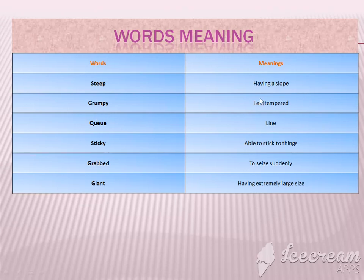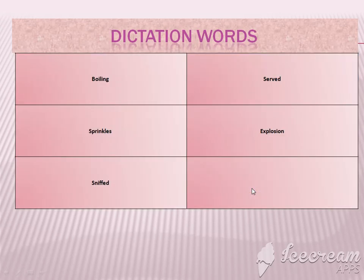Number one is steep — having a slope — jho aapke ups downs hote hain, dhalan si jo bani hoti hain. Grumpy — bad tempered. Sticky — able to stick. Grab — to seize suddenly. Giant — having extremely large size.